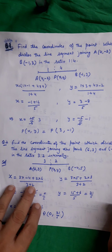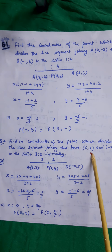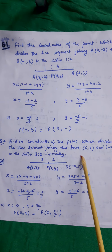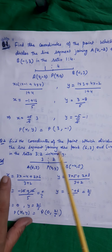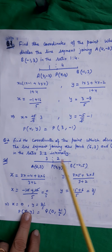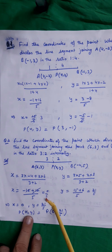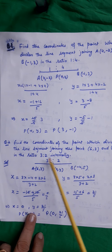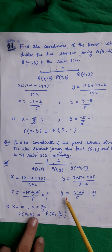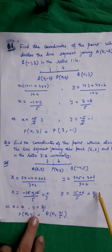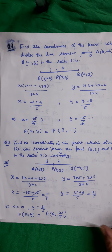One more question based on section formula: find the coordinates of the point which divides the line segment joining (6,3) and (−4,5) in the ratio 3:2 internally. Let P(x,y) be the point. Then x = (3·(−4) + 2·6)/(3+2) = (−12+12)/5 = 0/5 = 0. And y = (3·5 + 2·3)/(3+2) = (15+6)/5 = 21/5. So the coordinates of point P are (0, 21/5).